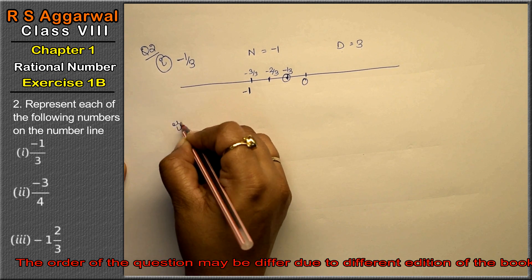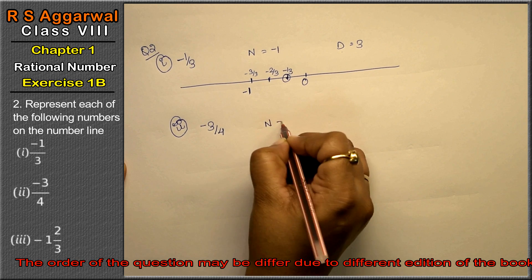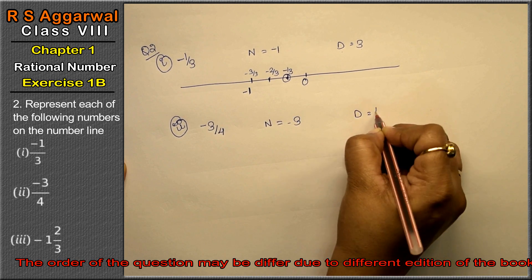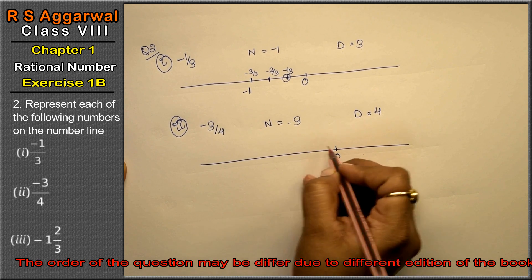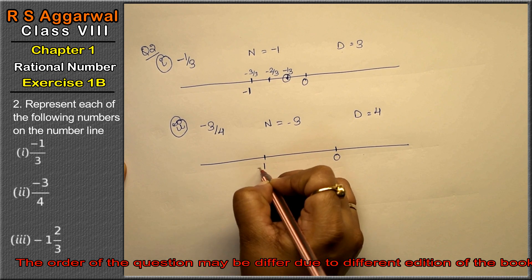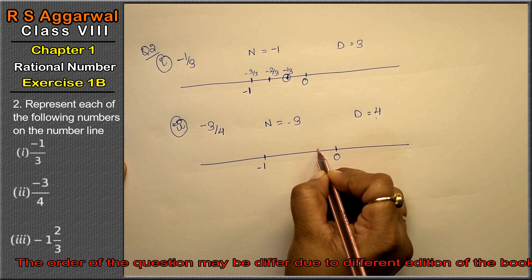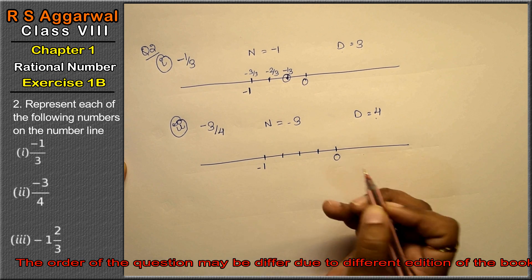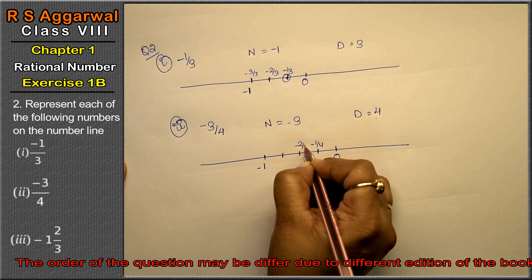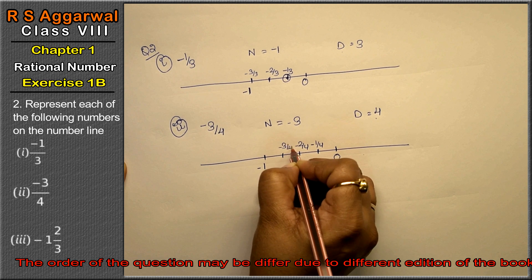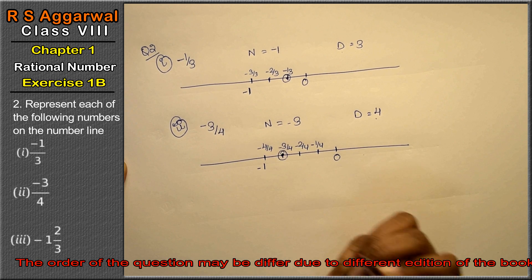Let's do second part. Second part is minus 3 upon 4. Numerator kya huwa minus 3 and denominator kya huwa 4. 0 yaha liya, ye maan le ye 1 hai minus ka, to iske 4 parts karo: minus 1 upon 4, minus 2 upon 4, minus 3 upon 4, minus 4 upon 4. So minus 3 upon 4 - this is the number on the number line.